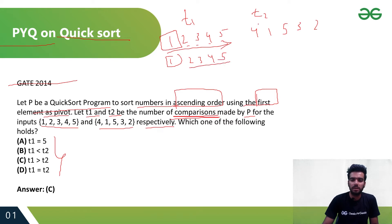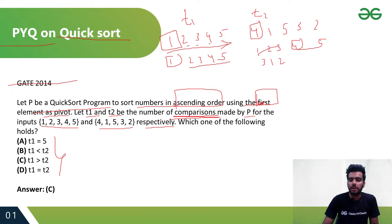For the second input, if we take 4 as the pivot element (as the first element), it will place 1, 2, 3 to the left and 5 to the right. These smaller elements can be in any order like 3,1,2 or anything. So after this partition the array is divided into a smaller part, and it will have fewer comparisons than the sorted case. So the number of comparisons t1 is greater than t2.